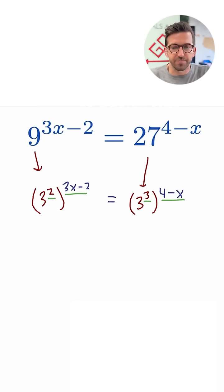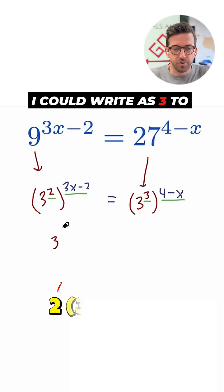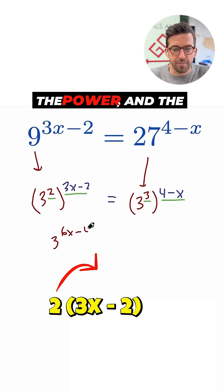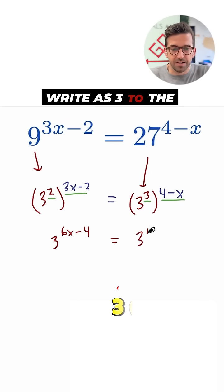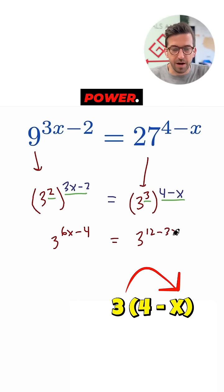So the whole left side of this equation I could write as 3 to the 6x minus 4 power, and the right side of this equation I could write as 3 to the 12 minus 3x power. Take a look.